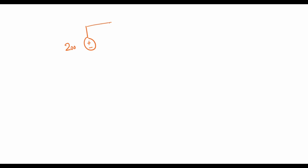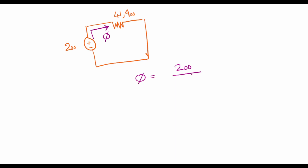With the equivalent circuit having F = 200 ampere-turns and total reluctance = 41,900 ampere-turns per Weber, the magnetic flux is simply phi = F / R_total = 200 / 41,900, which comes out to 0.0048 Weber.